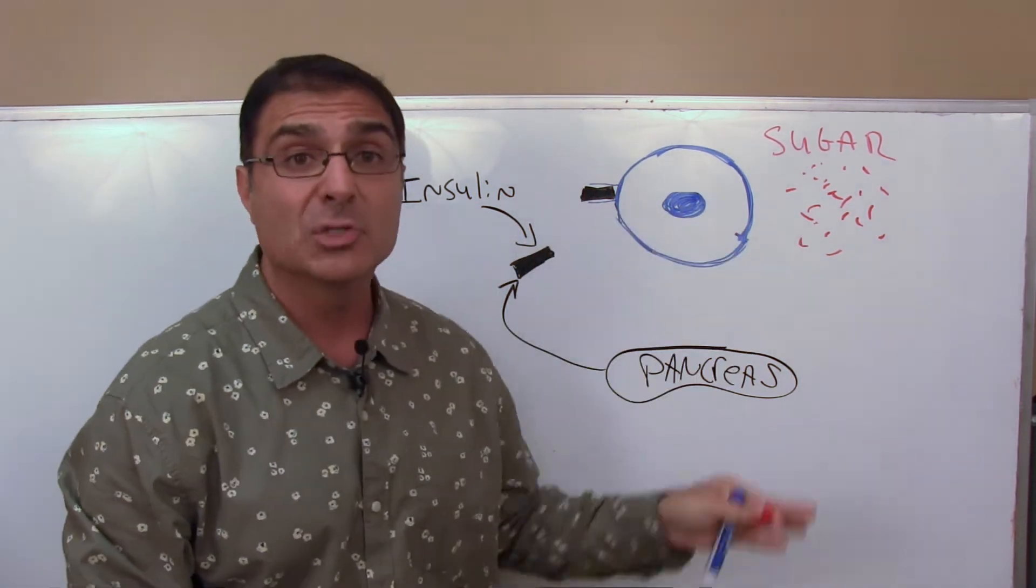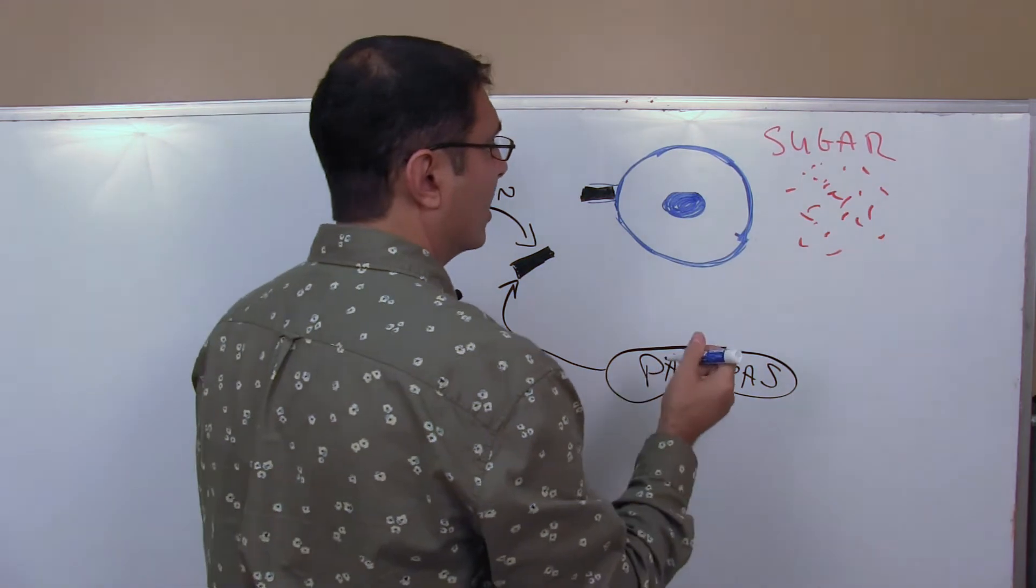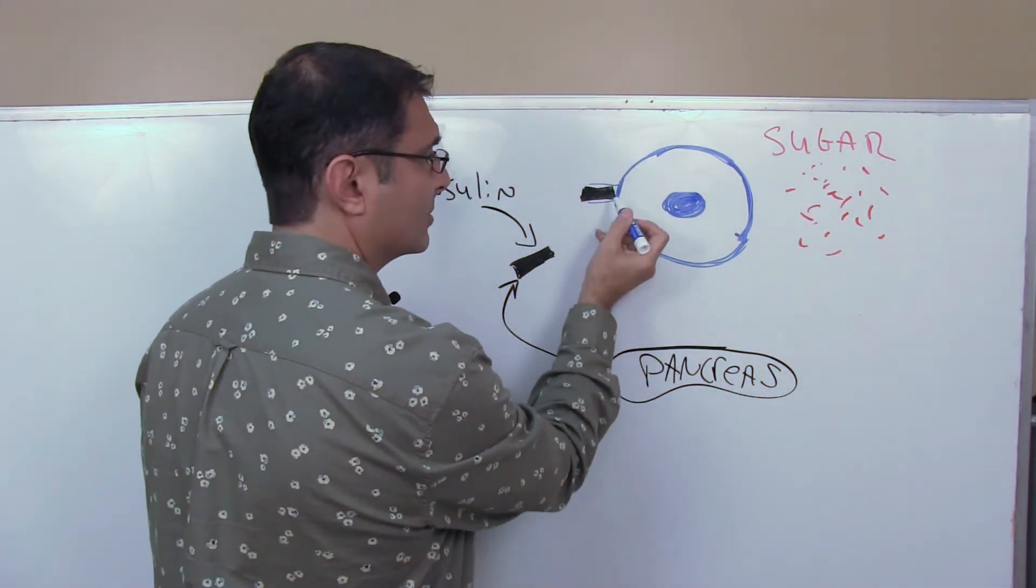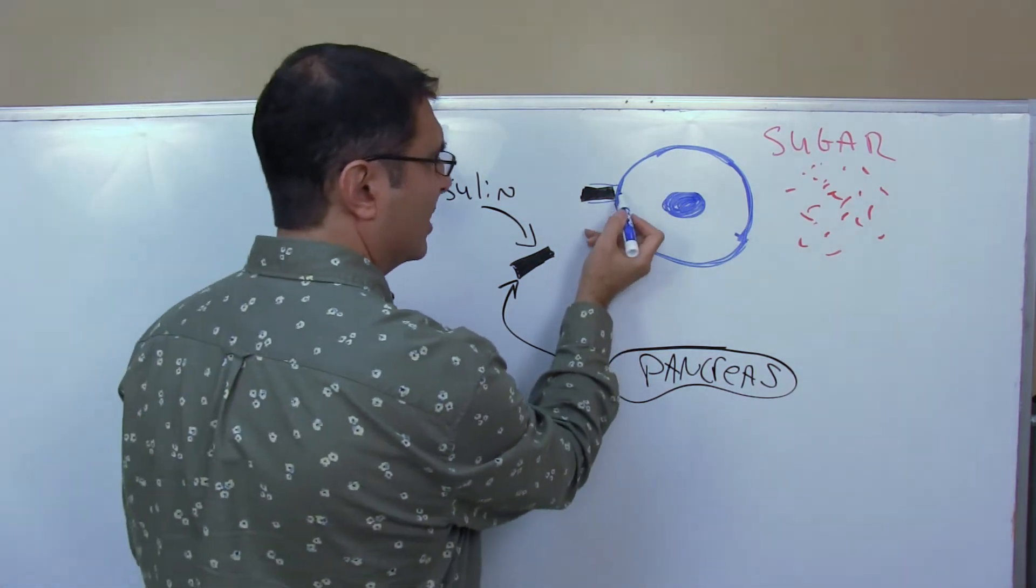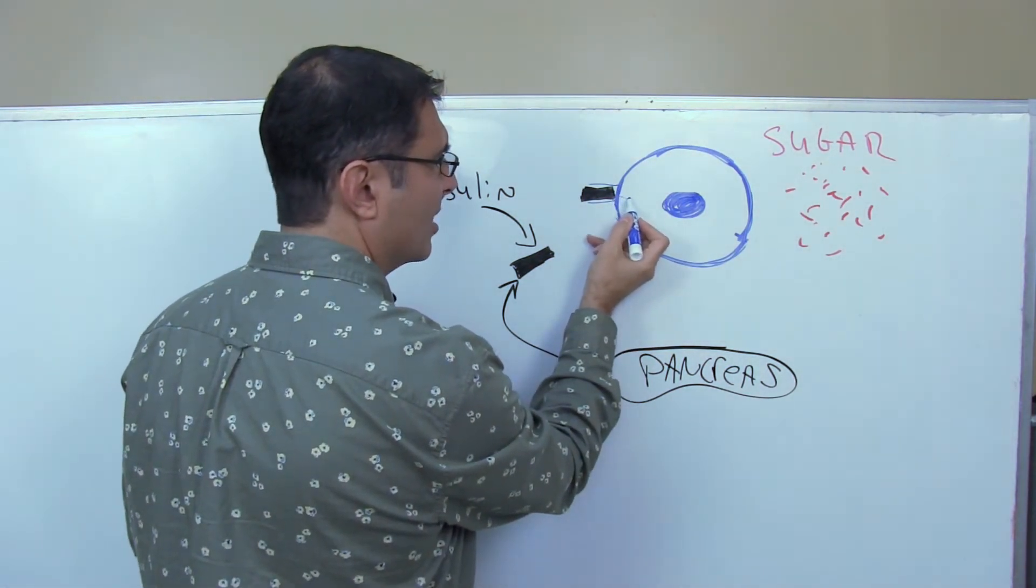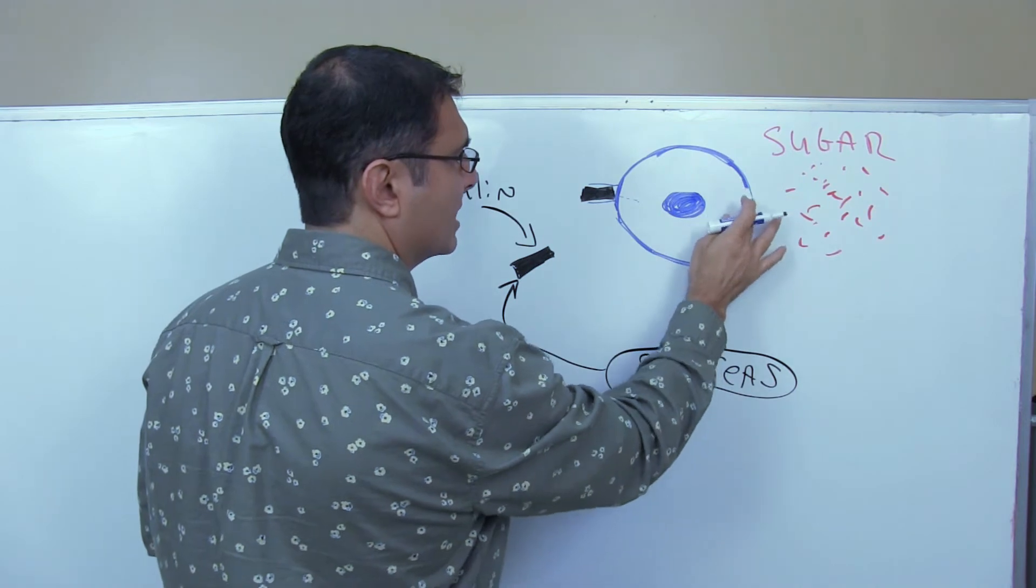It tells the cell, hey, absorb all the sugar. And the cell goes, huh? The receptor doesn't relay the message. The insulin goes, hey, absorb the sugar. And the cell goes, what? The receptor goes, what? What do you want me to do? Absorb the sugar. But it only gives the message just slightly.